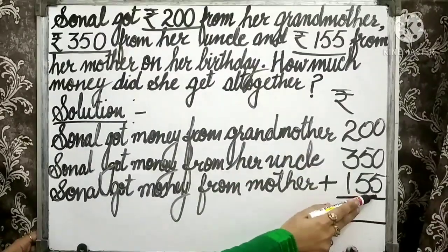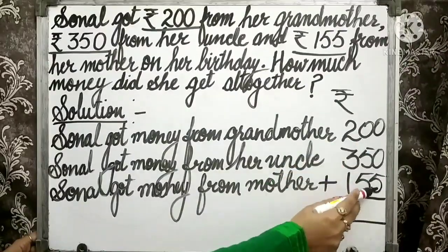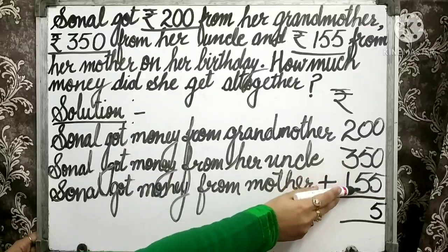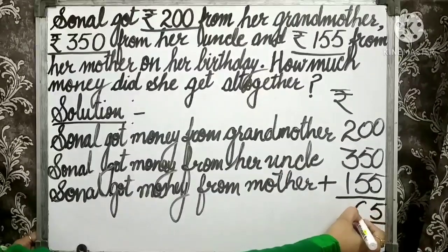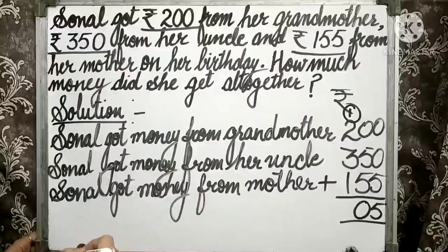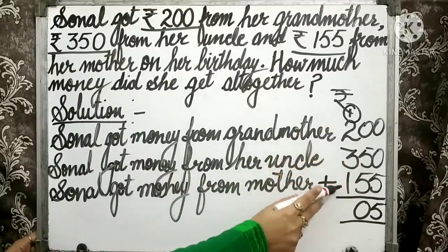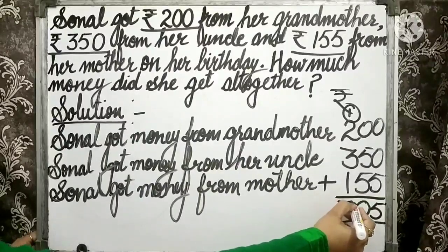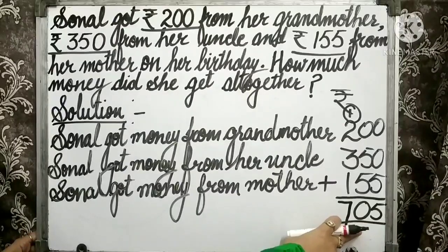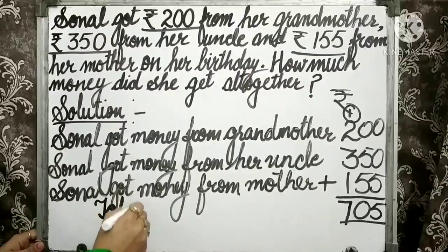In the ones place, 0, 0, and 5 are given. So 0 plus 0 plus 5 gives 5. In the tens place: 0 plus 5 is 5, and 5 plus 5 gives 10. So write 0 in the tens column and carry over 1 to the next column. Now 1 plus 2 gives 3, 3 plus 3 is 6, and 6 plus 1 is 7. So the total amount she gets from all her relatives is Rs. 705. Here we need to write the total amount: Rs. 705.